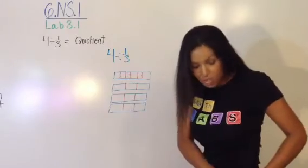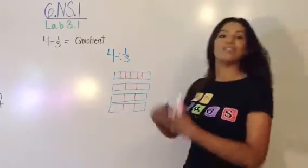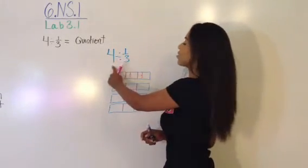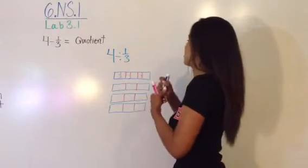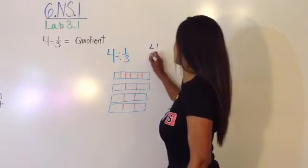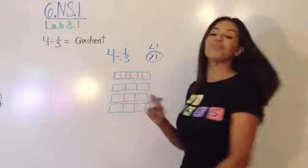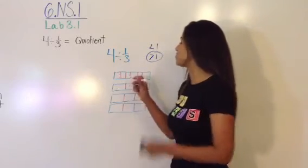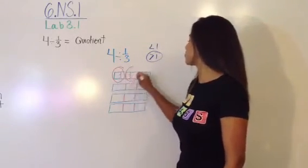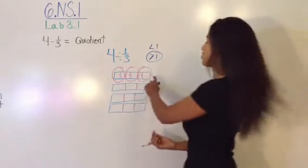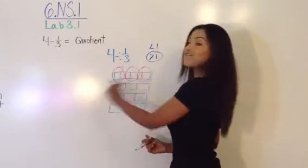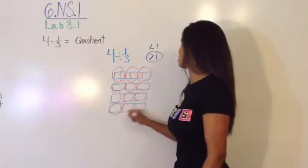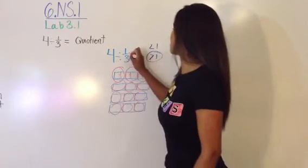I talked about using estimation. Do you think it's greater than one or less than one? Well, a third is pretty small, so it's going to go into four a lot of times, so it's going to be greater than one. Our option on your lab sheet is less than one or greater than one, and we're going to circle greater than one — that's our estimation. Then we're going to find the quotient by circling groups of one third. There are three thirds in a whole, but we have four wholes. So we have 3, 6, 9, 12. Our quotient is twelve — a third goes into four twelve times.